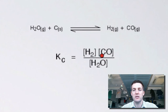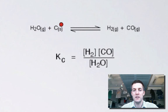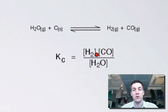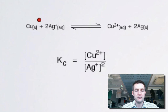Moving on to a second example with two reactants and two products in a 1:1:1:1 mole ratio, so there are no powers in this equilibrium constant expression — all powers are one. In this case, not all substances are gases; carbon is a solid, so it doesn't appear in the expression. Water here is a gas, so we do include it. We multiply the concentrations of products on top and divide by reactants, not including the solid carbon.